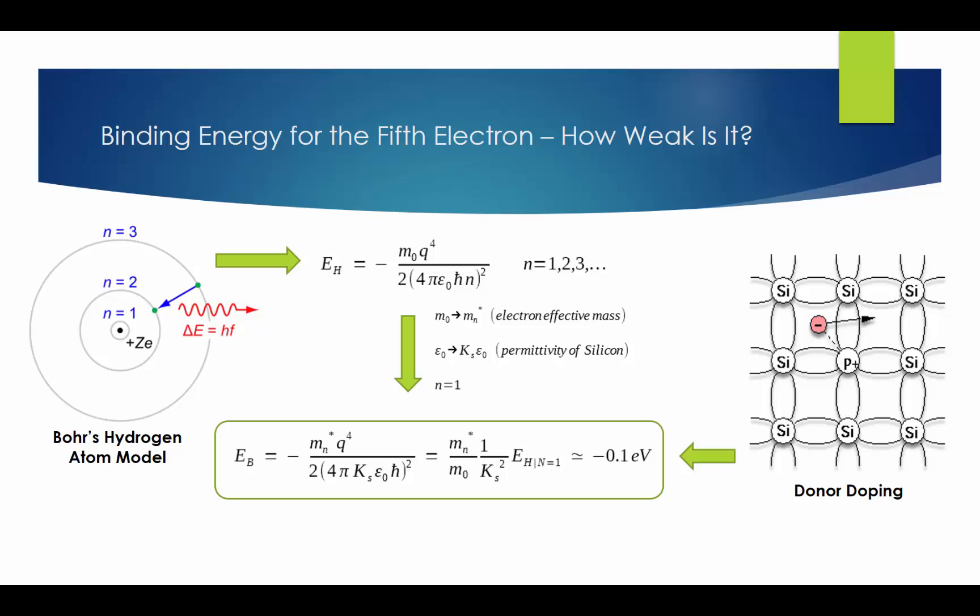In donor doping, we said the extra fifth electron is weakly bound around the phosphorus atom and can easily escape at room temperature. However, we need to know exactly the binding energy for this weak bond. The positively charged donor core plus the fifth electron can be thought as similar to a hydrogen atom, per Bohr's model. However, in a hydrogen atom, the electron moves in a vacuum. In our case, the fifth electron moves through silicon atoms. Thus, we need to use its effective mass instead of the electron's rest mass m0. Also, we need to use the primitivity of silicon rather than of free space. Then, based on this formula for binding energy of a hydrogen electron, we can calculate the binding energy of the fifth electron. And it turns out to be minus 0.1 electron volt.